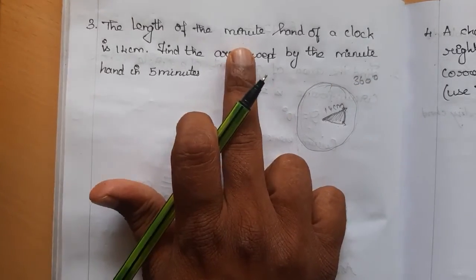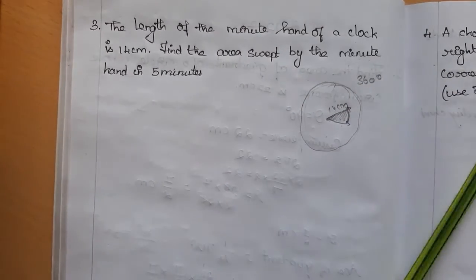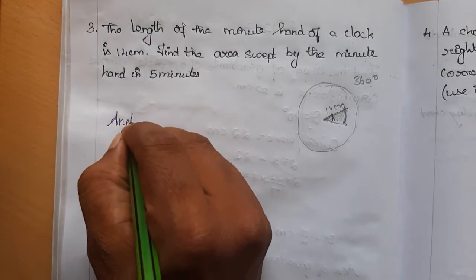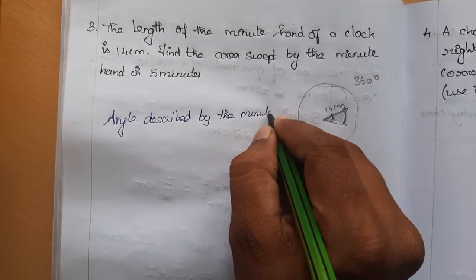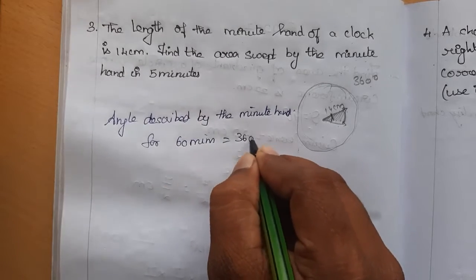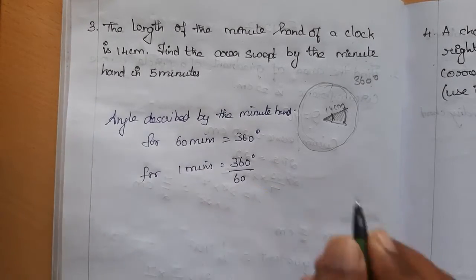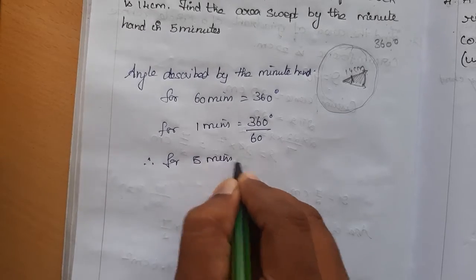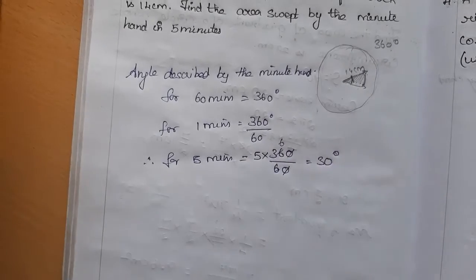For 60 minutes the angle is 360 degrees. For 1 minute, the angle is 360/60 = 6 degrees. Therefore, for 5 minutes the angle is 5 × 6 = 30 degrees. So theta = 30 degrees. The radius equals the length of the minute hand, which is 14 cm.